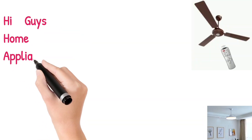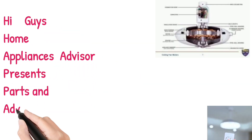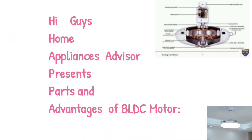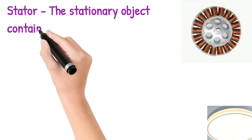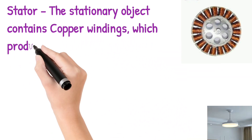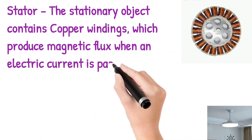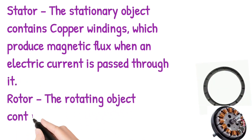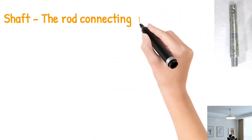Home Appliances Advisor presents parts and advantages of BLDC motor. Stator: the stationary object contains copper windings which produce magnetic flux when an electric current is passed through it. Rotor: the rotating object contains permanent magnets.